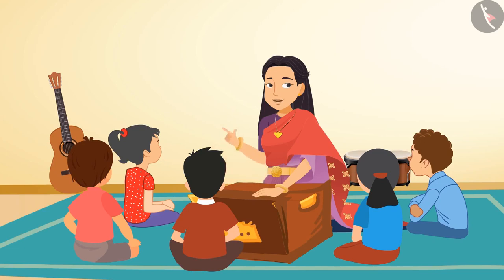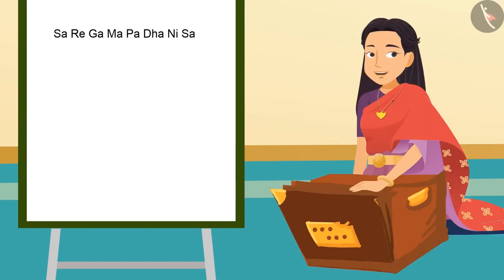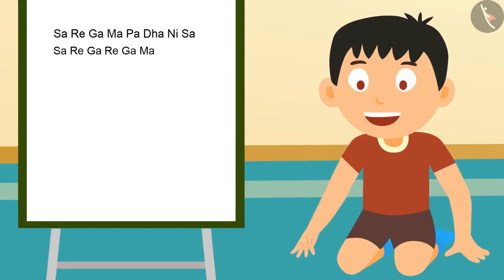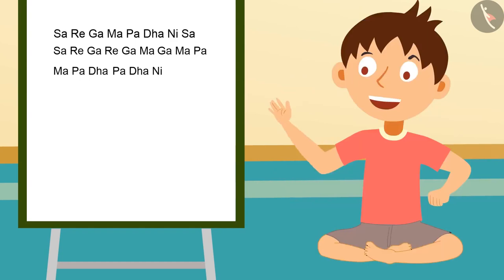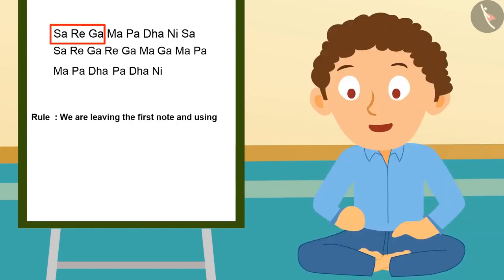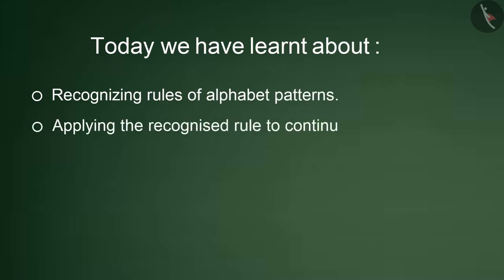Let's make a new pattern now. Can we take three notes together? If we take three notes together like Sa, Re, Ga — then what comes next? Re, Ga, Ma. Then Ga, Ma, Pa. Then Ma, Pa, Dha. Then Pa, Dha, Ni. The rule of this pattern is: we leave the first note and use the corresponding three notes each time. Today we have learnt about recognizing rules of alphabet patterns and applying the recognized rule to continue the pattern.